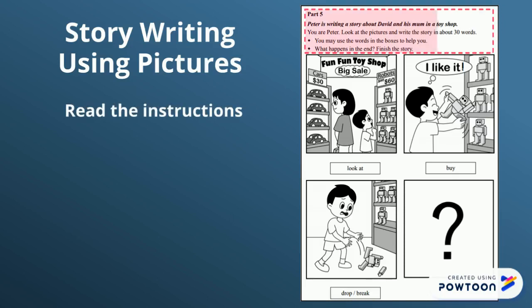Part 5. Peter is writing a story about David and his mum in a toy shop. Look at the pictures and write the story in about 30 words. You may use the words in the boxes to help you. What happens in the end? Finish the story. Today, we will write more than 30 words.